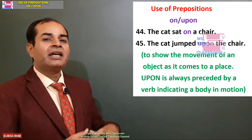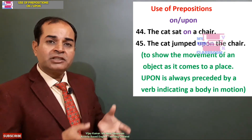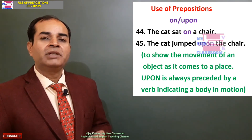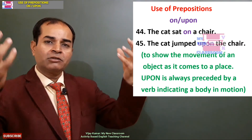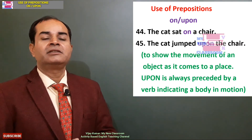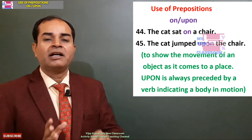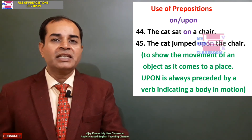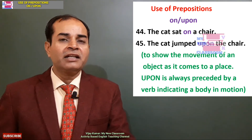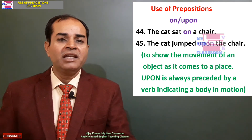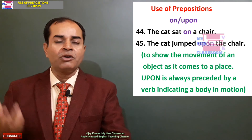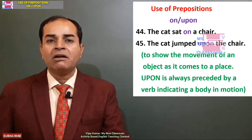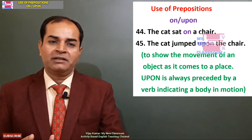The cat jumped upon the chair — the cat leaped upon the chair. 'Jumped', as you can see, like 'pounced', indicates that the body is in motion. These are the indicators that the body is in motion. Hence, instead of using 'on', we use 'upon' here.